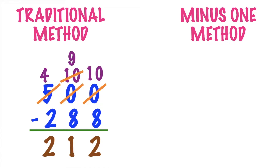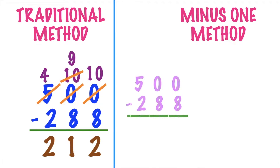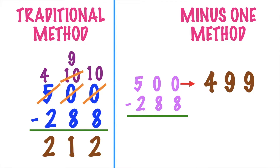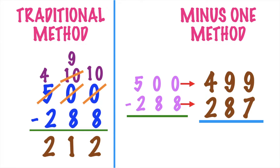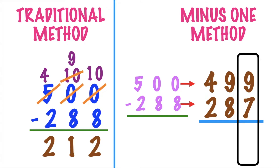Let's proceed to the minus-1 method. For the minus-1 method, we have 500 minus 288. All we need to do is subtract 1 from the minuend. So 500 will become 499. And also subtract 1 from the subtrahend. So 288 will become 287. We can now subtract them. Let's start from the ones place. 9 minus 7 equals? Very good, it's 2.